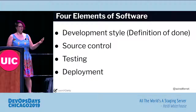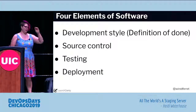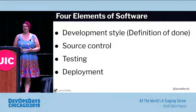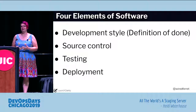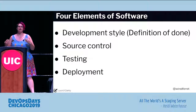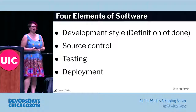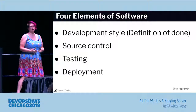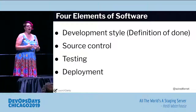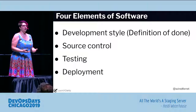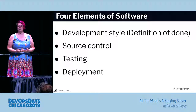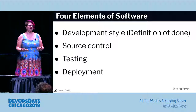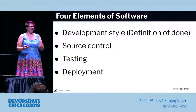The four pillars I'm talking about are: development style — what is the definition of done? This covers things like waterfall, agile, and Kanban. How do you know what it is you're supposed to write and what that means?